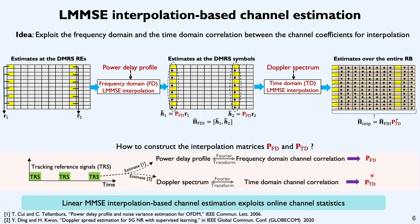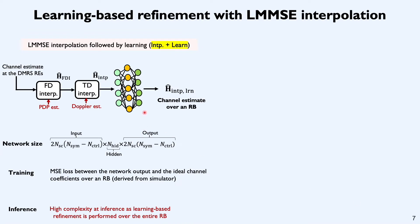While LMMSE interpolation based channel estimation techniques exploit online channel statistics that comes in the form of TRS, they have one limitation wherein the estimator is constrained to be linear in nature. One way to overcome this limitation is to simply cascade the LMMSE interpolation procedure with a neural network based refinement technique. In this case, you notice that h hat interpolated which comes after LMMSE interpolation goes into the neural network and it gets further refined. The first question is how do we even train this neural network? To train it, we first need to establish a database that contains a collection of h hat interpolated and the corresponding ideal channels over the RBs. These ideal channels are typically derived from a channel simulator.